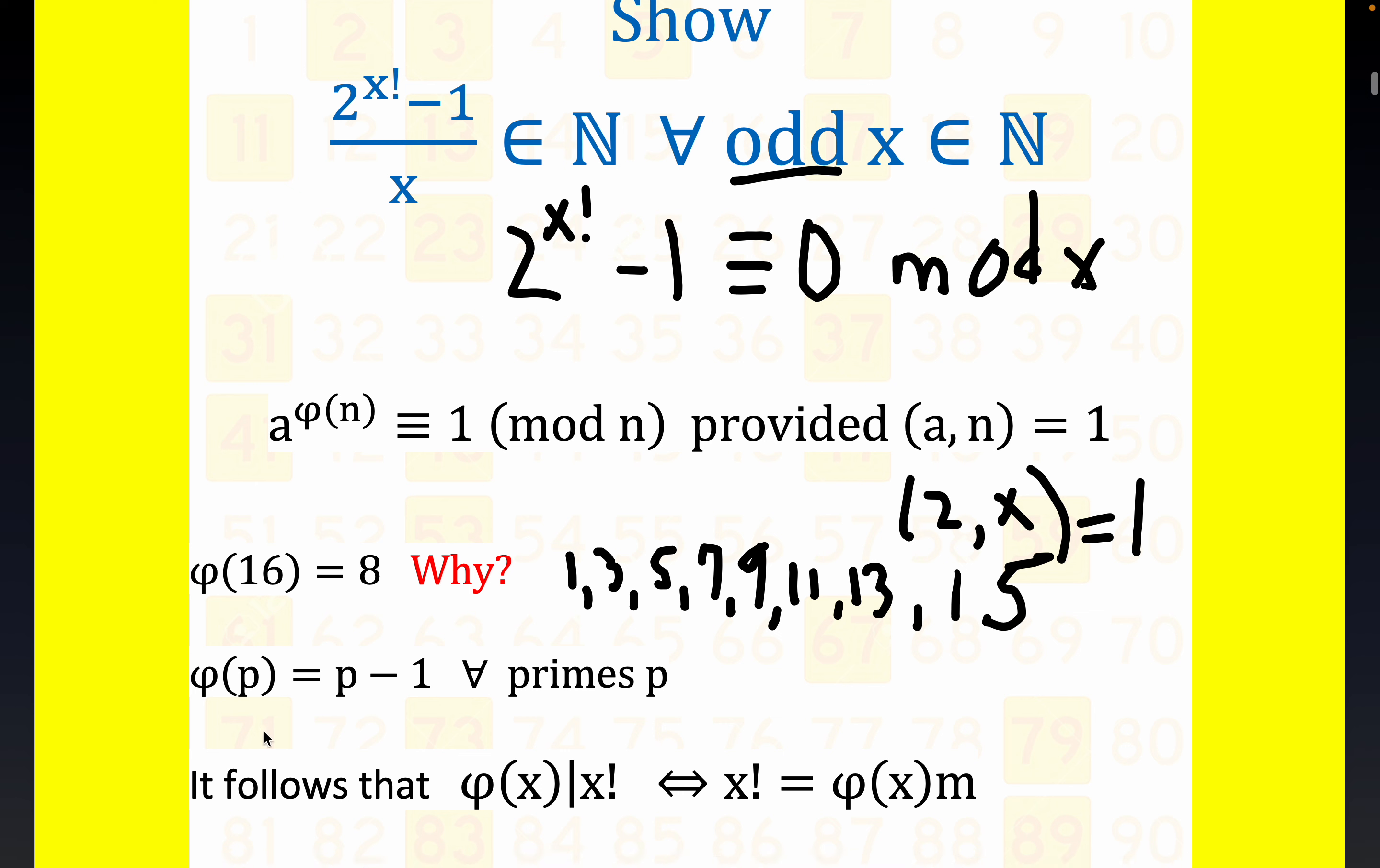Now, just some examples of what the φ function does. φ of p, this is almost a defining thing for a prime number. Because a prime number is what it is, there are p minus 1 values that are relatively prime to p, less than p. Otherwise, it wouldn't be a prime number. It would be composite.